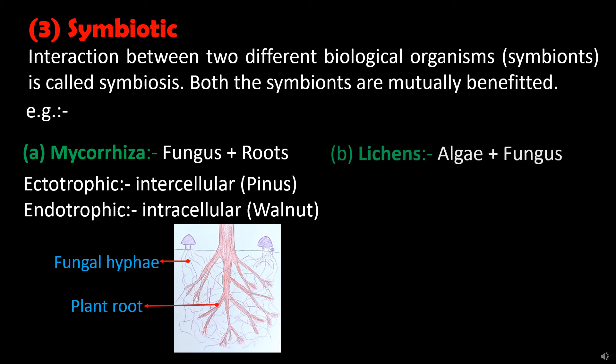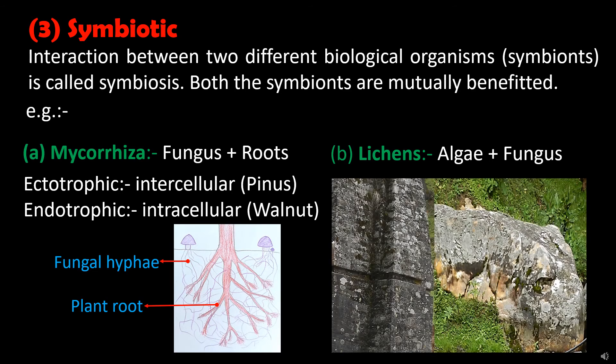The second example of symbiotic association is lichen — the association of algae with fungus. In this case, algae provide shelter and food to the fungus, and in return, fungus provides protection, water and mineral supply to the algae. You might have seen lichens as large crusty, leaf-like patches on rocks, walls of old buildings, and also on trees. You can see the picture for reference.